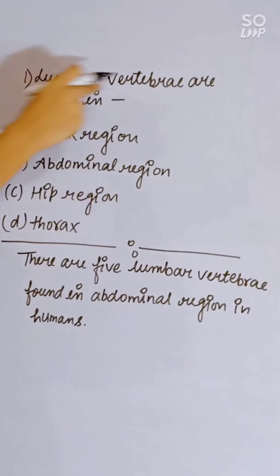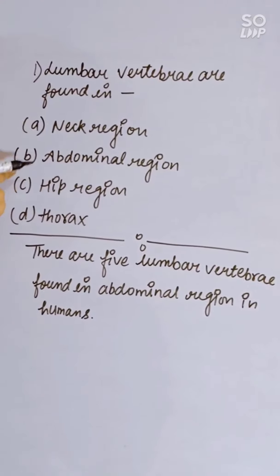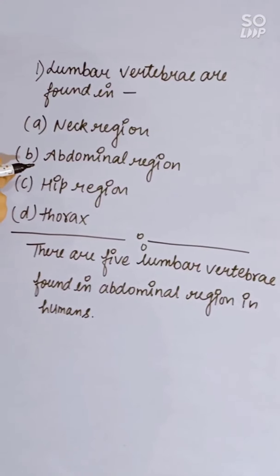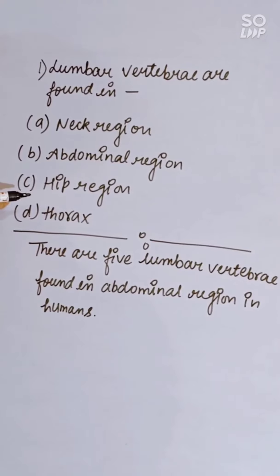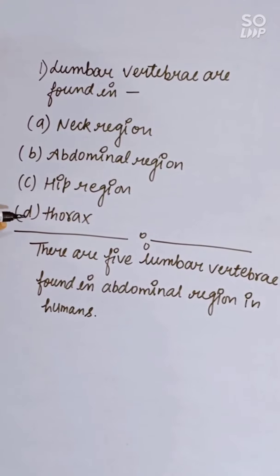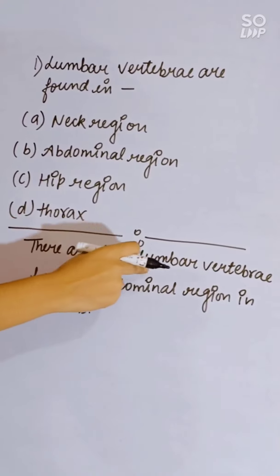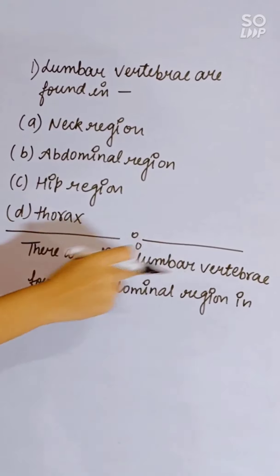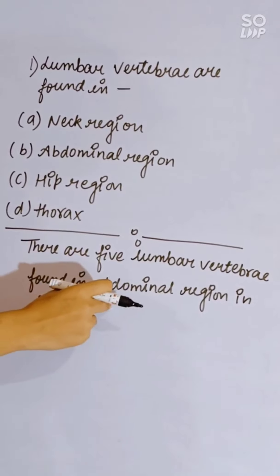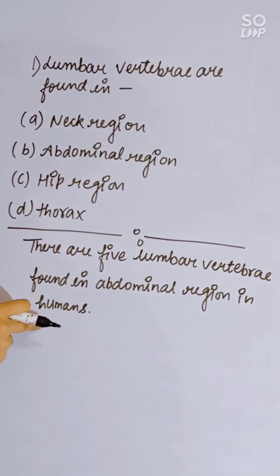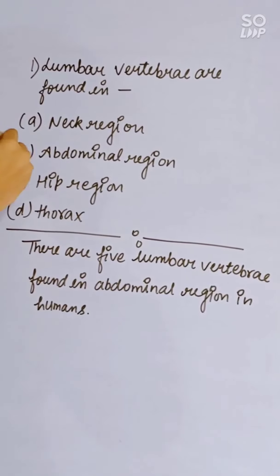Lumbar vertebrae are found in which region? Options: neck, abdominal, hip, or thorax. There are five lumbar vertebrae found in the abdominal region. Correct answer is B, abdominal region.